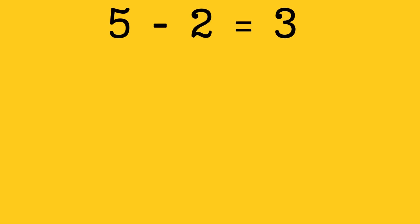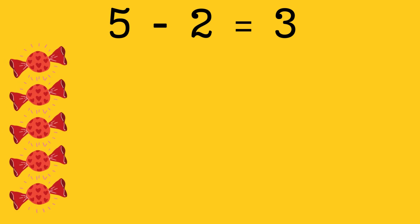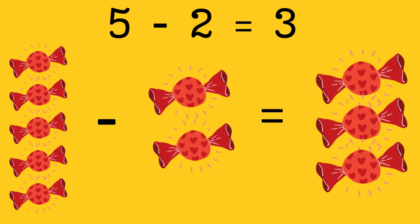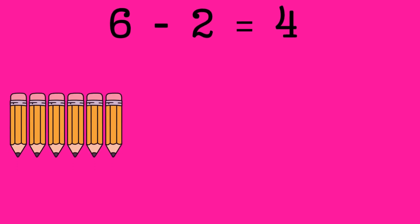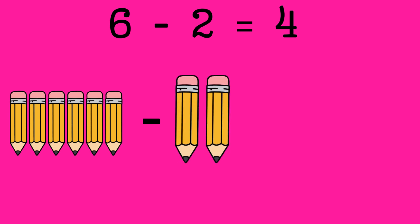5 minus 2 equals 3. Let's say you have 5 chocolates and you shared 2 with your sister. How many chocolates left? Correct, 3 chocolates. 6 minus 2 equals 4. Let's say you have 6 pencils and you gave 2 to your classmate.